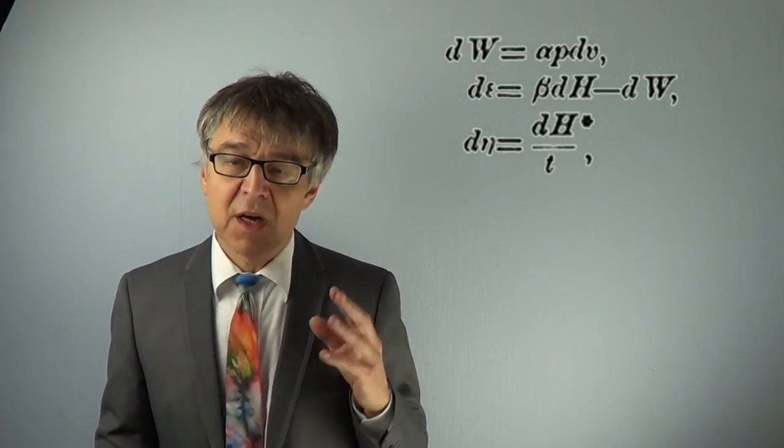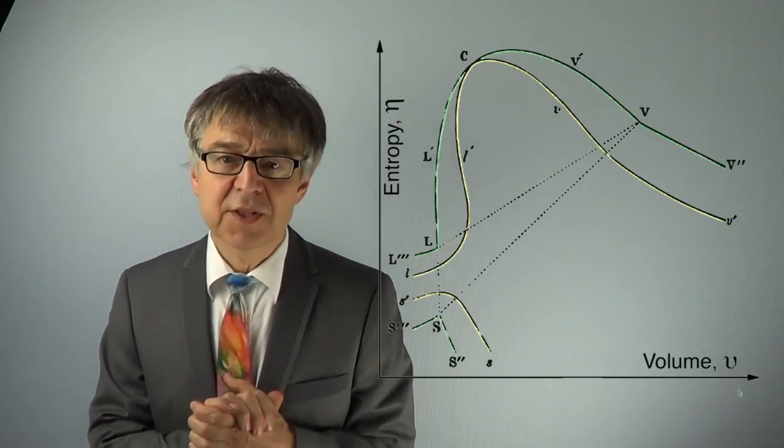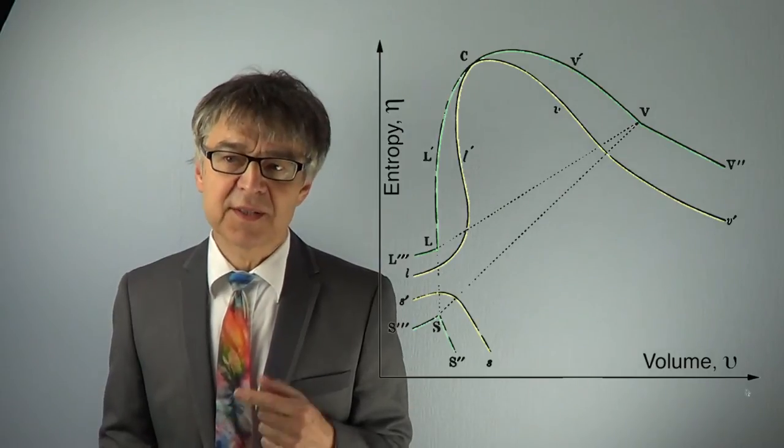He correlates these variables verbally and with equations only using very few pictures. Furthermore, in his works, Gibbs did not only use uncommon Greek letters for state variables, like eta for entropy, he also used two-dimensional images for his three-dimensional discussion.